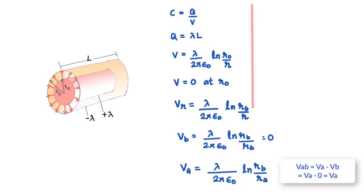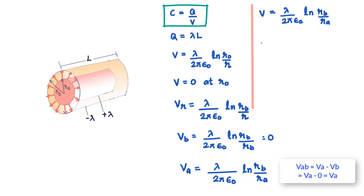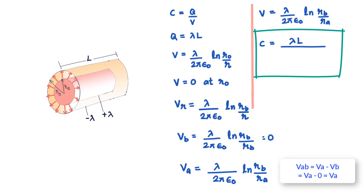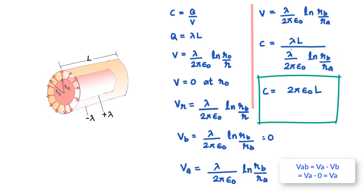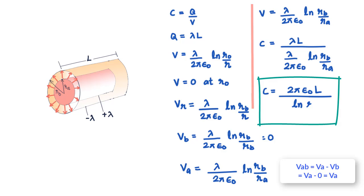Hence the potential difference V_AB = λ/(2πε₀) · ln(R_b/Rₐ), where λ is positive and the inner cylinder is at a higher potential than the outer. The capacitance is then C = Q/V_AB = λL / [λ/(2πε₀) · ln(R_b/Rₐ)], which simplifies to C = 2πε₀L / ln(R_b/Rₐ).